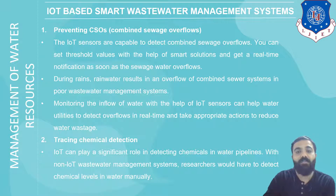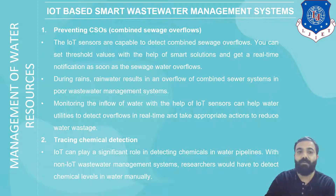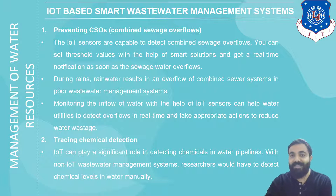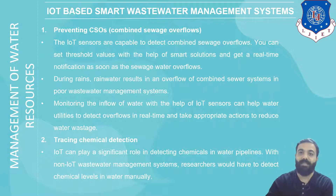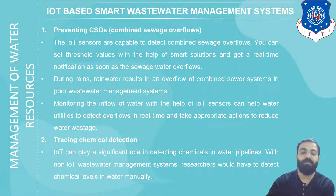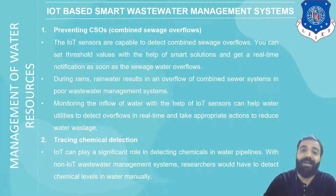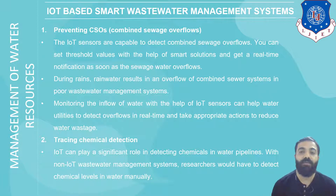There are some IoT-based smart waste water management systems. First, preventing CSOs — combined sewage overflows. IoT sensors are capable of detecting combined sewage overflows. When sewage overflows, the sensor warns the relevant agency or municipality. You can also get real-time notifications as soon as the sewage water overflows. During rains, rain water results in overflow of the combined sewer system in poor waste water management situations. By using IoT sensors, you can be aware when the sensor warns about that situation.